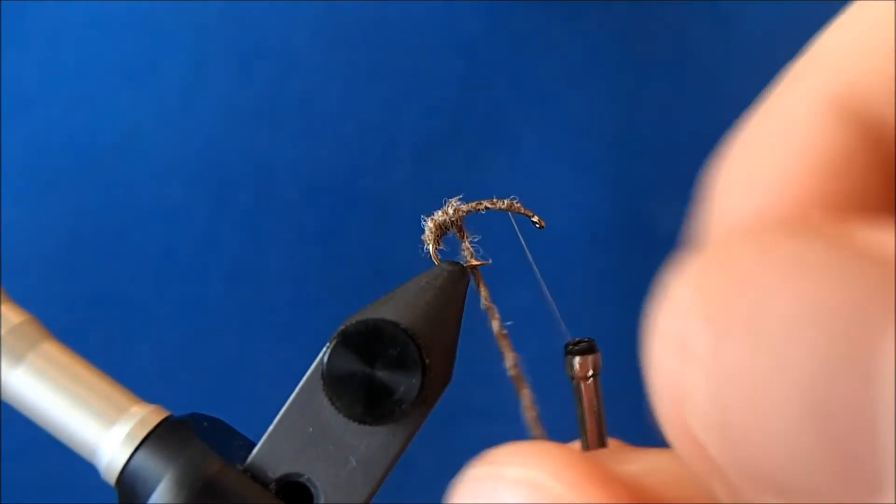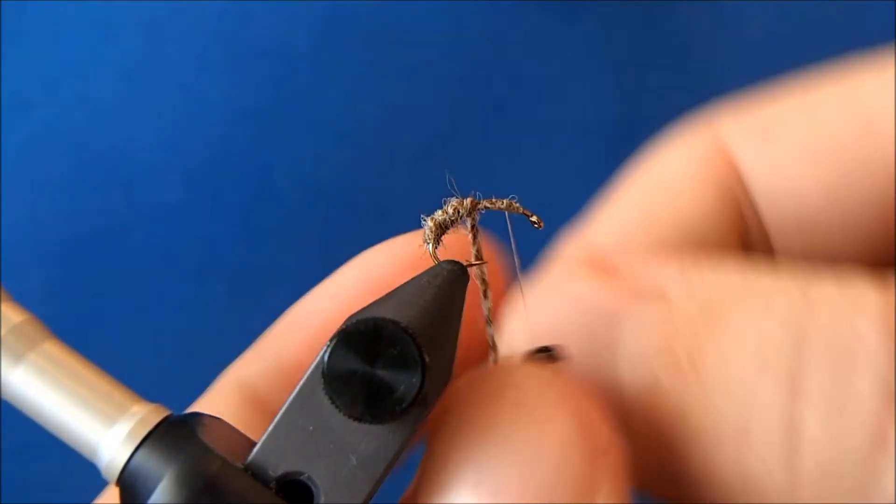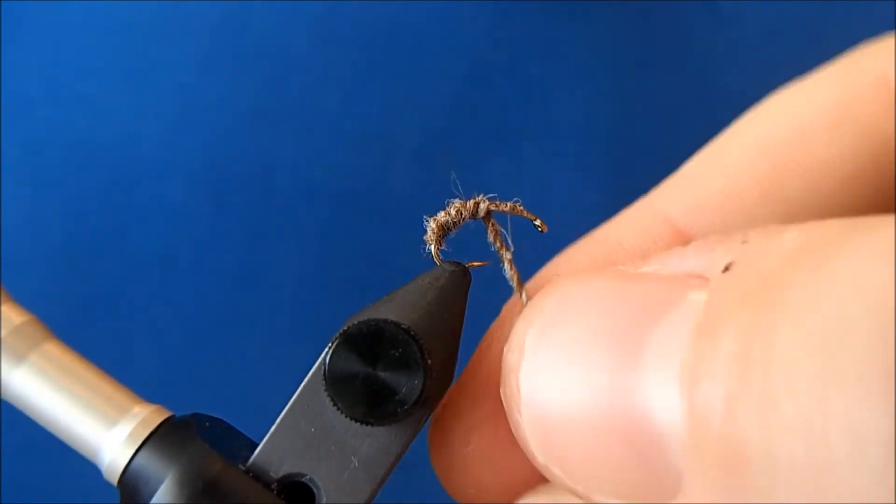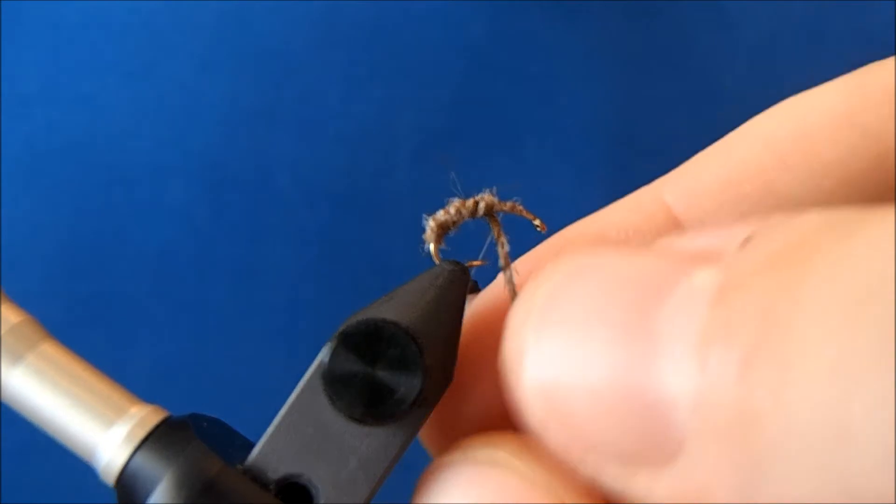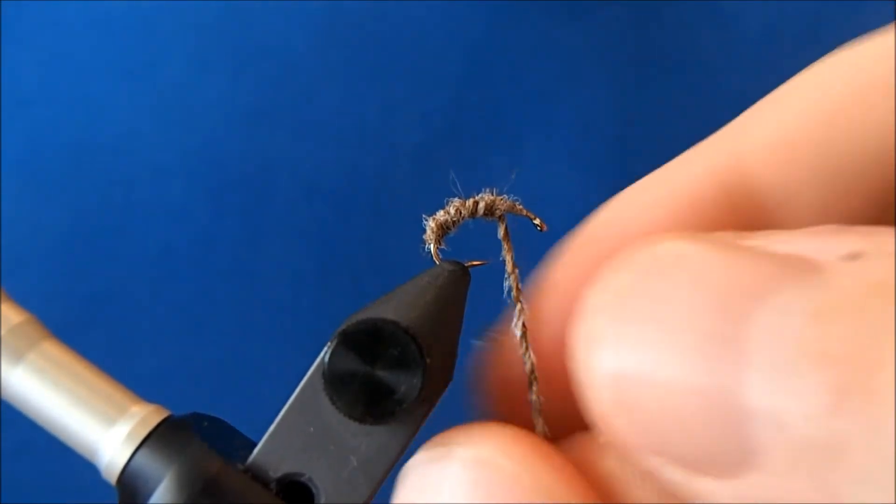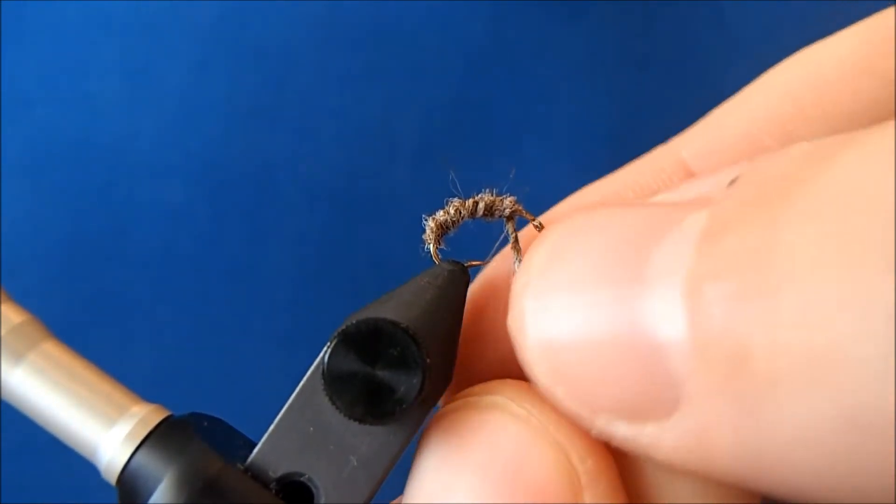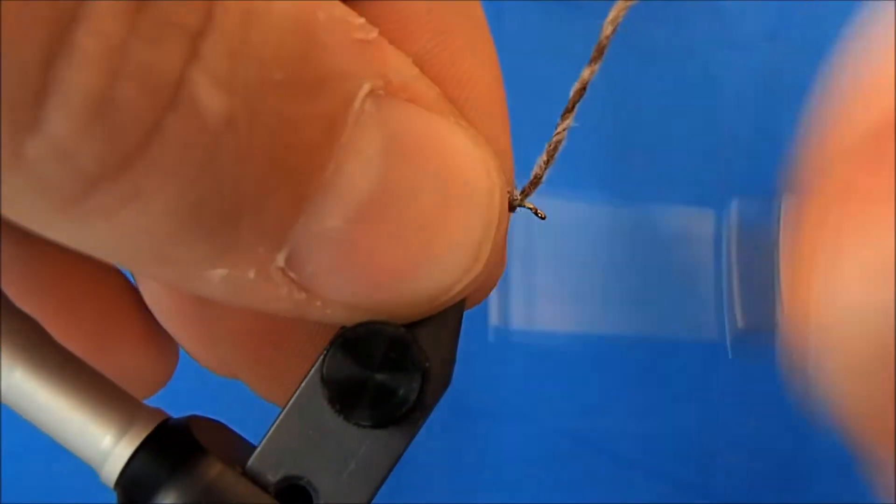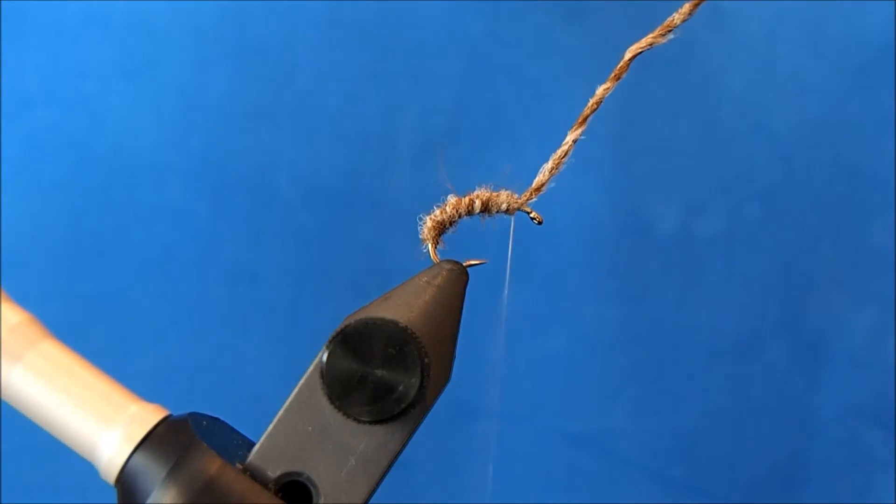If you want a more segmented body, you can just put more twists in it, and it'll make that segmentation really pop. And when I reach my thread, I'll tie it off and trim.